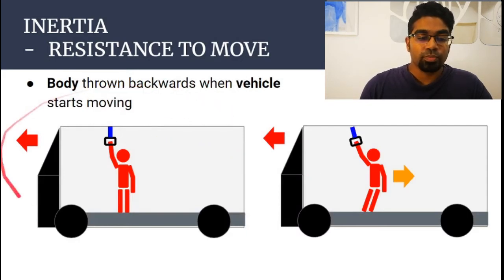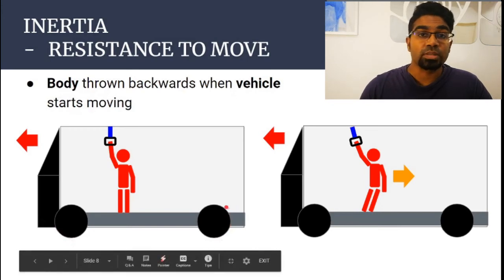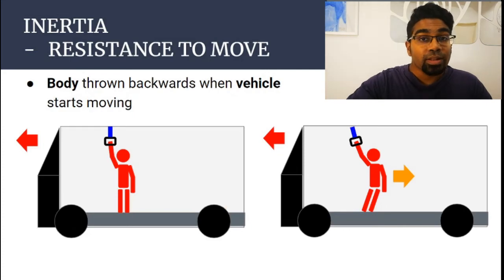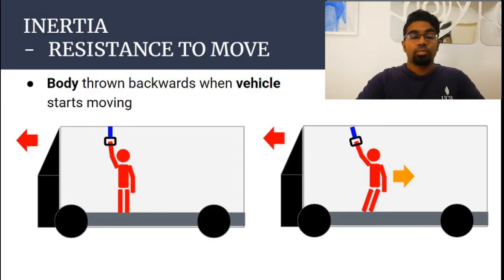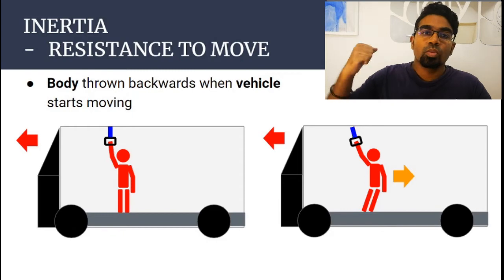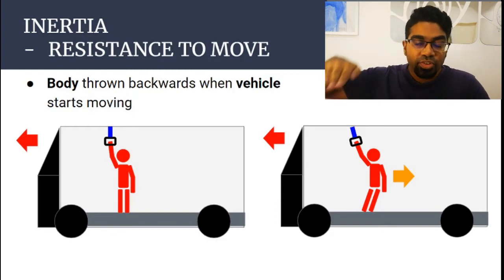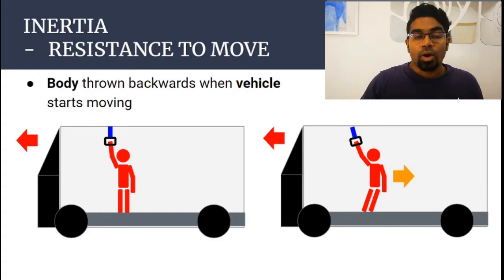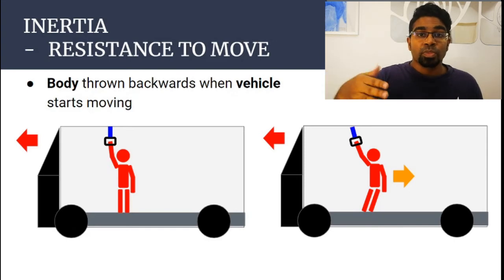Another example is when you get onto a bus or train that just starts to move. You would have felt your body being thrown backwards slightly. This is because your body does not want to start moving — the bus or train has already started to move, but your body wants to stay where it is. By the principle of inertia, your body continues its state of rest, so it feels as if you are being pushed backwards.